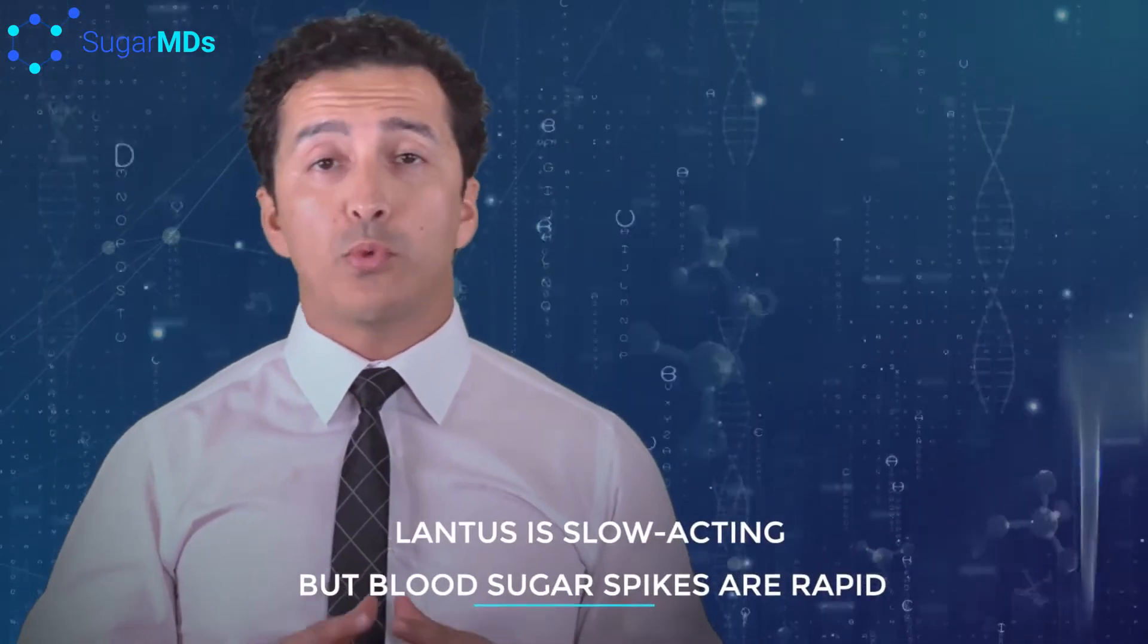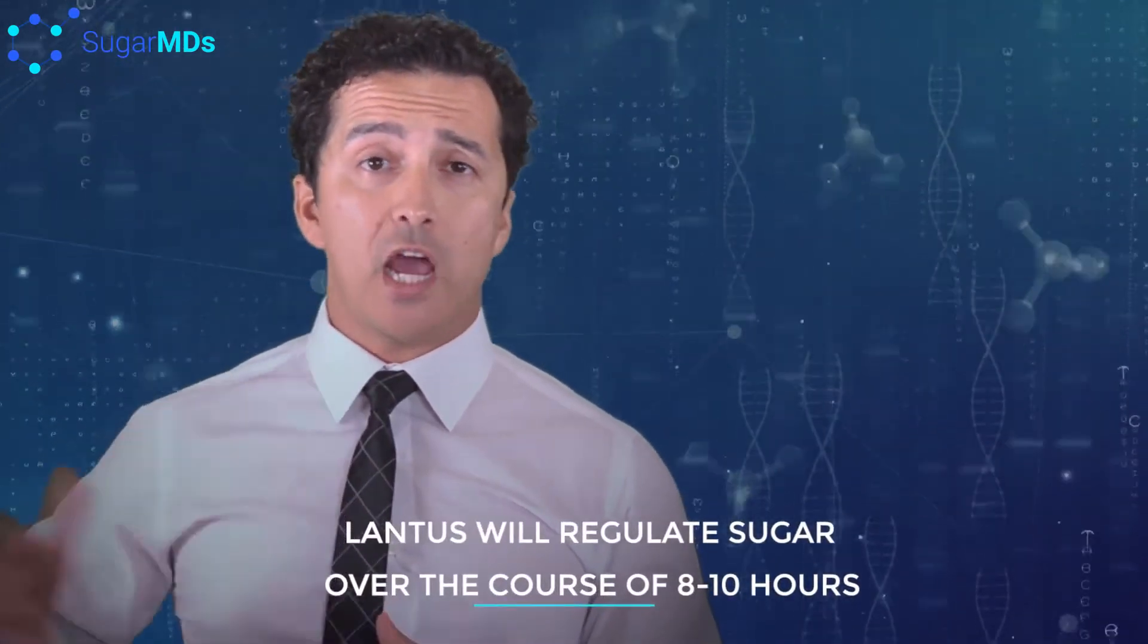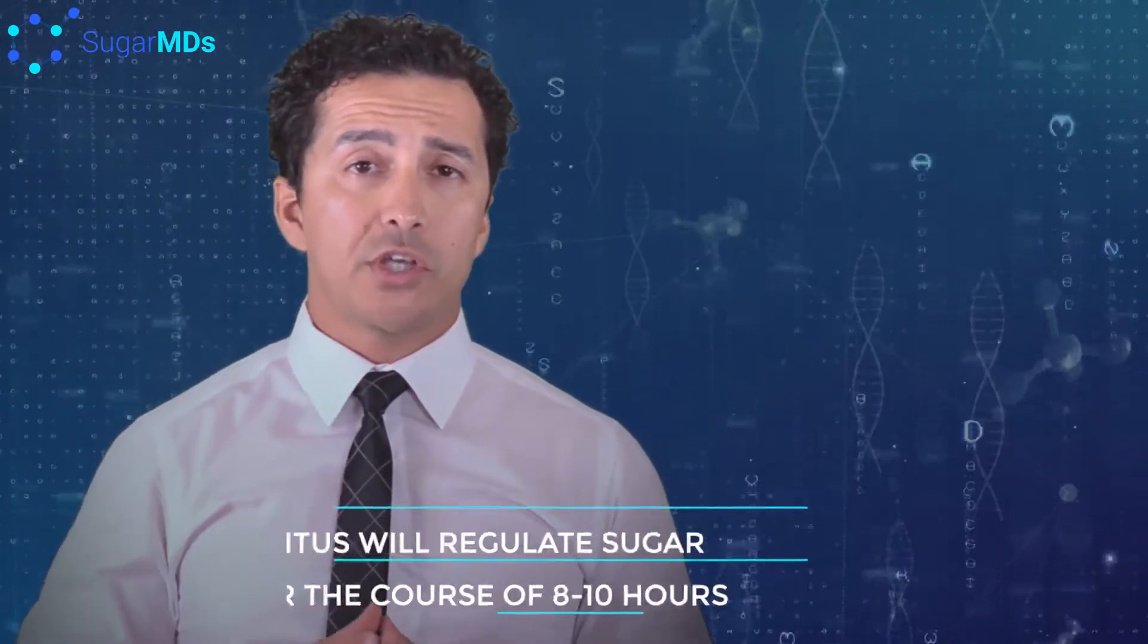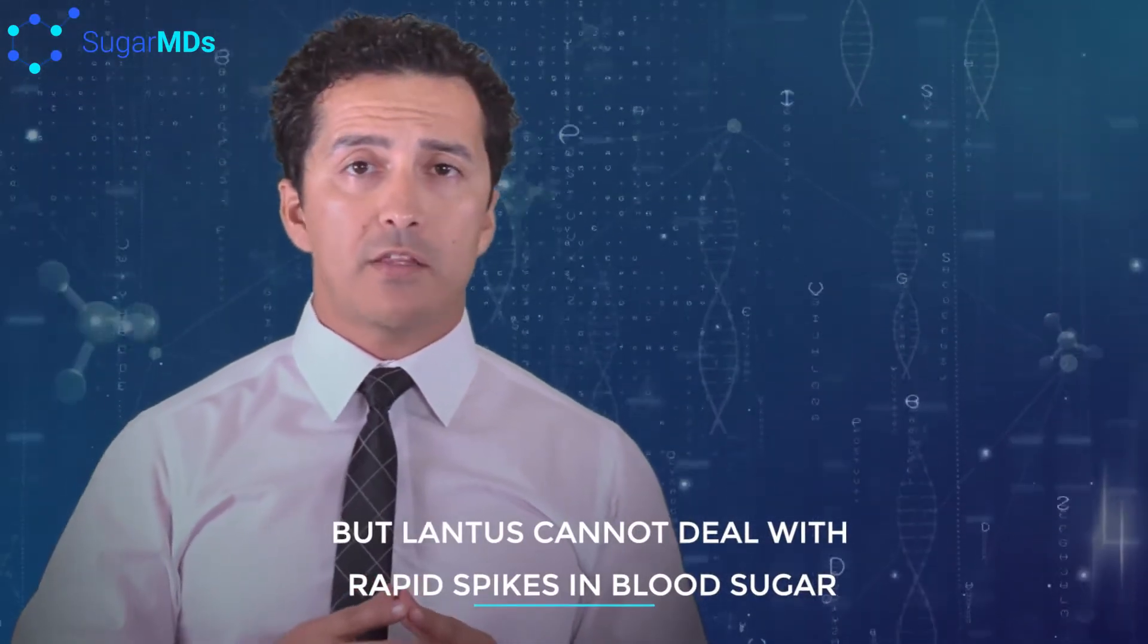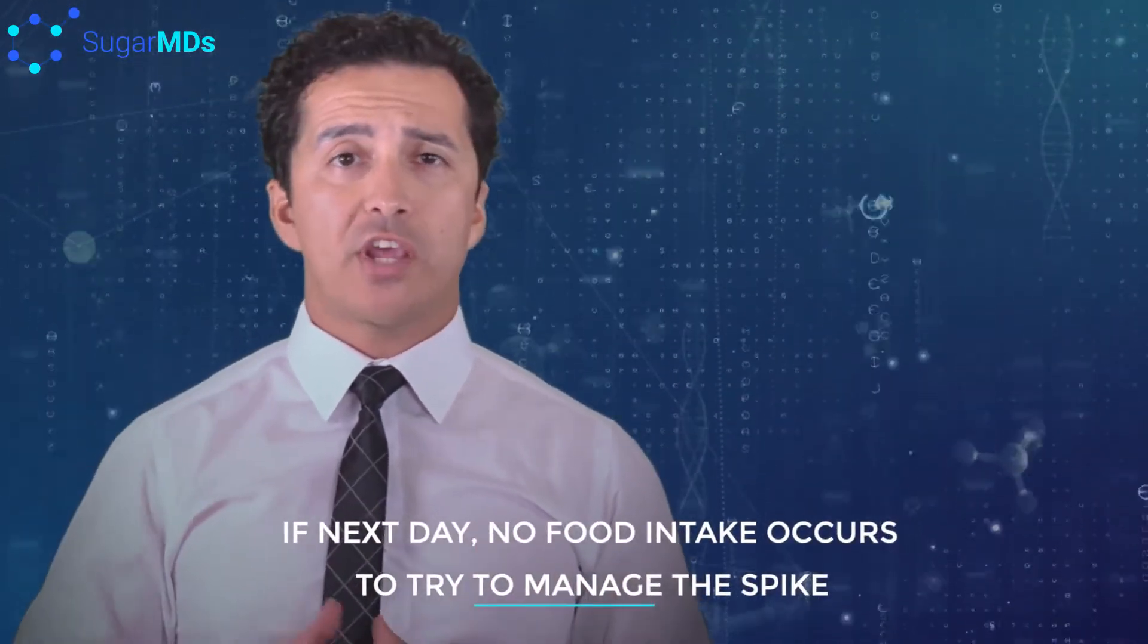Why is that a mistake? The problem is Lantus is a slow-acting insulin. On the other hand, your blood sugars spike so fast after meals, there's no way Lantus can help with that. It can in the next eight or ten hours, however that will be too late. Your blood sugar will spike, let's say 200, 250, or 300, and if you do not eat anything for the next 10 hours, yes, Lantus will bring that down. The problem with that approach is if you did not eat that much, let's say next day, you're